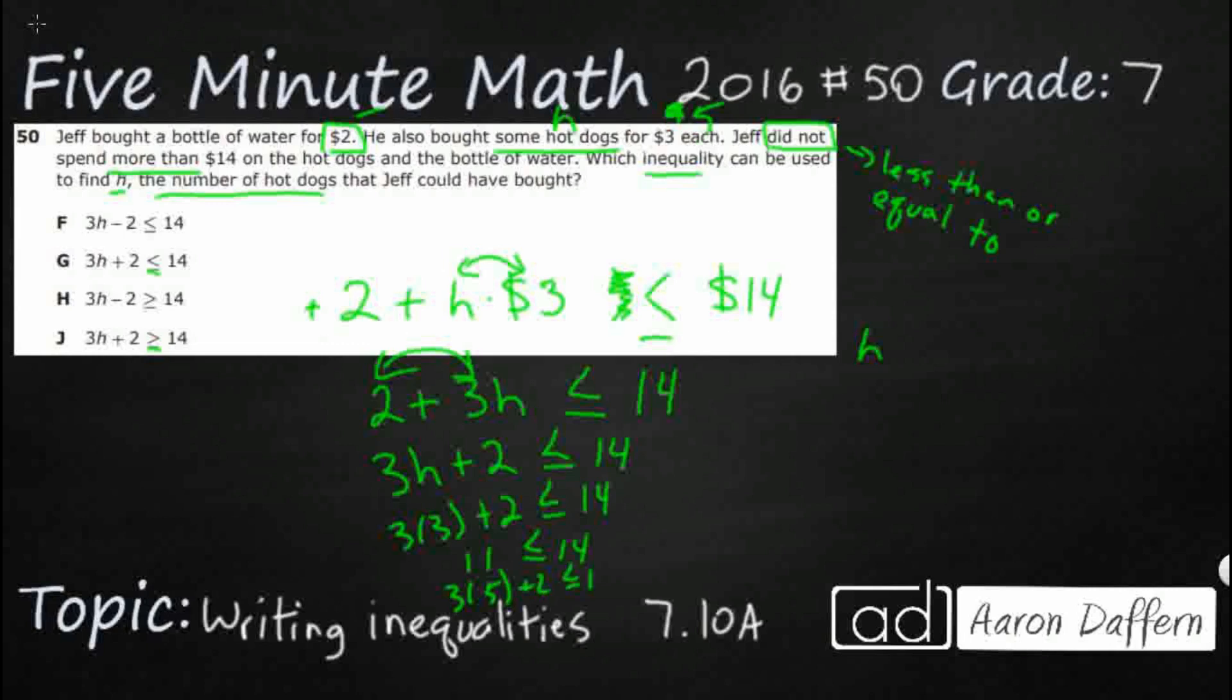And see, look, that breaks this because this doesn't work anymore. That'd be 15, 17. So yeah, here is our answer, 3H plus 2 is less than or equal to 14, answer G.